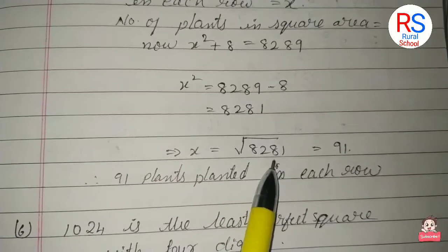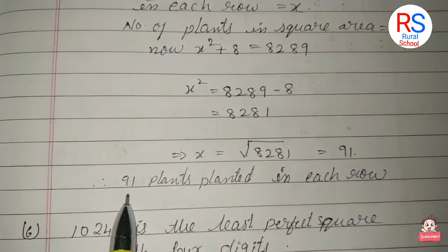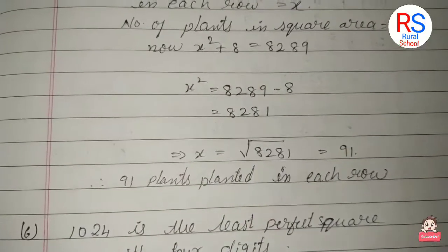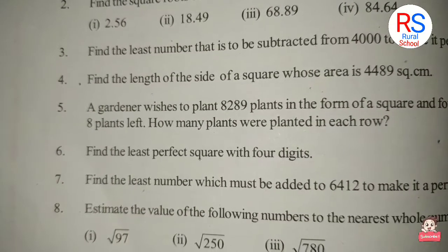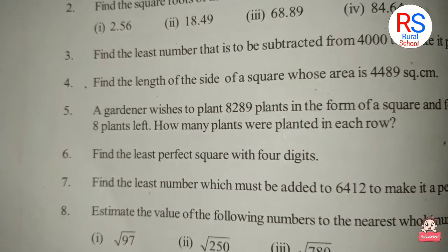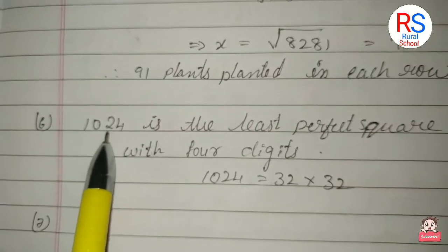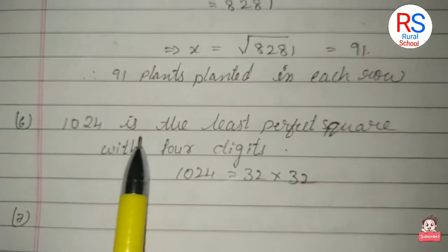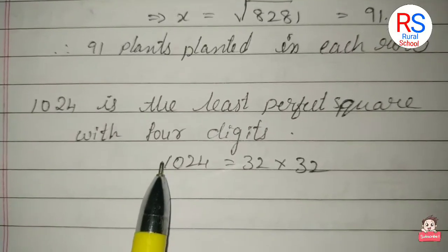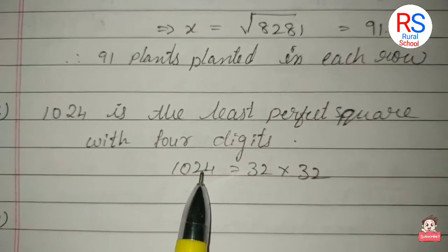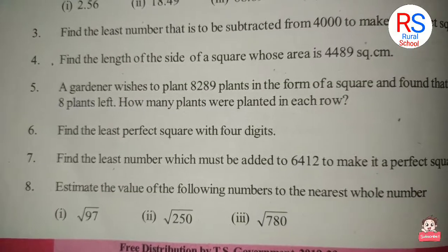√8,281 = 91. So 91 plants planted in each row. Next problem: The least perfect square of 4-digit numbers is 1024. 32 × 32 is the least perfect square of 4-digit numbers. Find the least number which must